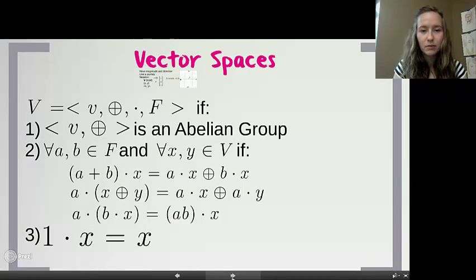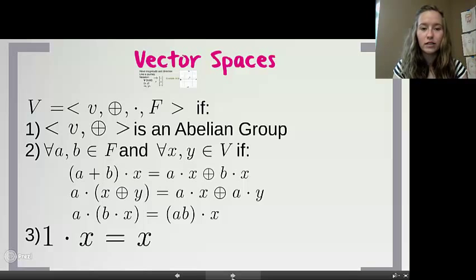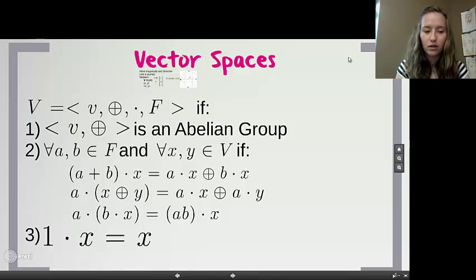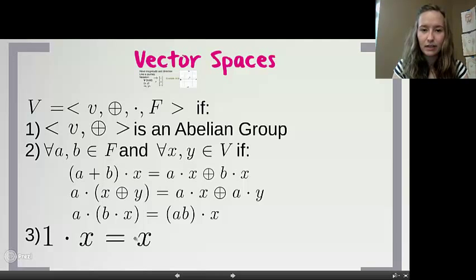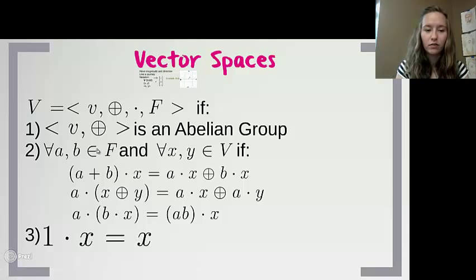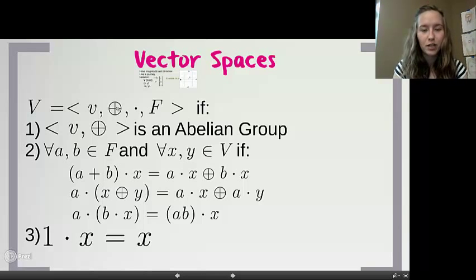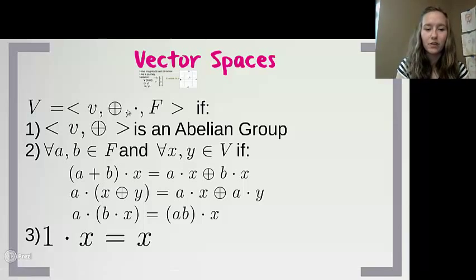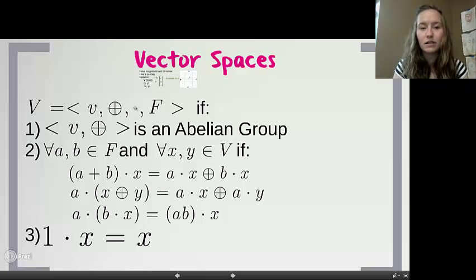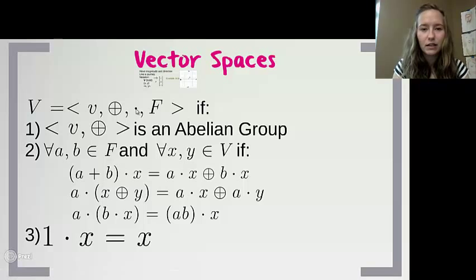Now that we know what a vector is, I'm going to talk about what a vector space is. It's a set of vectors that forms an abelian group under addition. It has two distributive properties and an associativity property, as shown here. It also has the multiplicative identity. When I say vector addition, I mean the first operation of my group, and vector multiplication means the second operation — which does not necessarily need to be standard addition and multiplication.